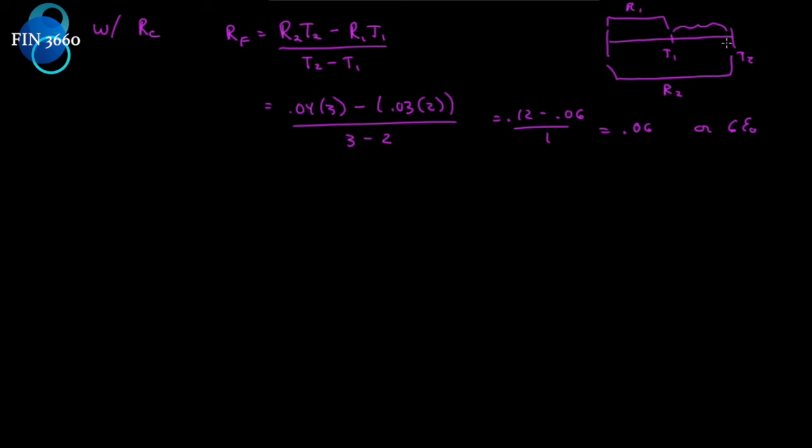So, no matter what we're looking for, we always know what R2 is. R2 is the longer termed zero. R1 is the shorter termed zero. T2 is the length of time that applies to the R2 rate. T1 is the length of time that applies to the R1 rate, and we're trying to solve for the unknown 1 year.